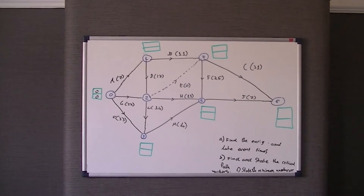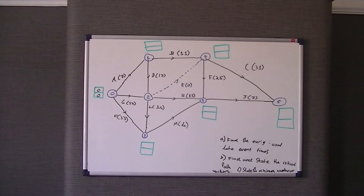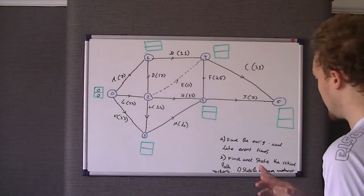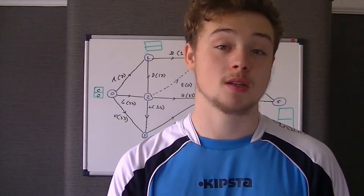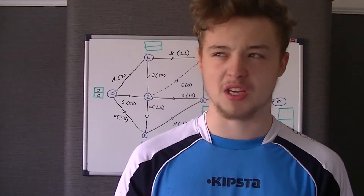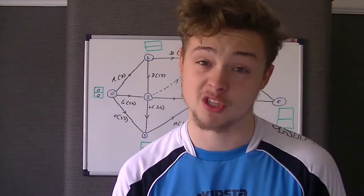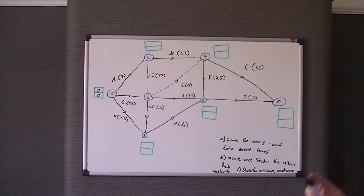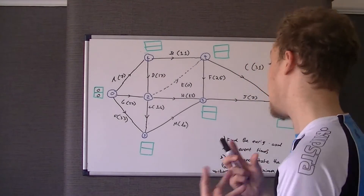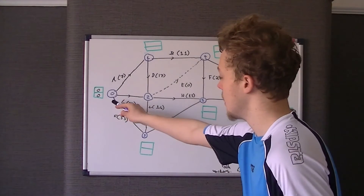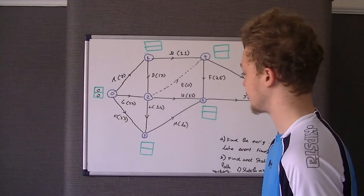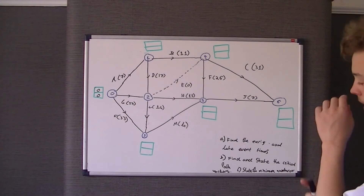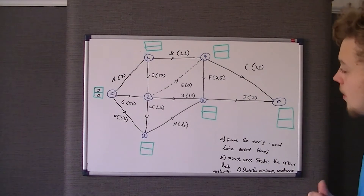Hopefully you've had a go at that. Let's answer it. Part (a) should be relatively straightforward if you understand the context of early and late times. Going from left to right we look at the path with the biggest weighting — the early event time will be the larger value.